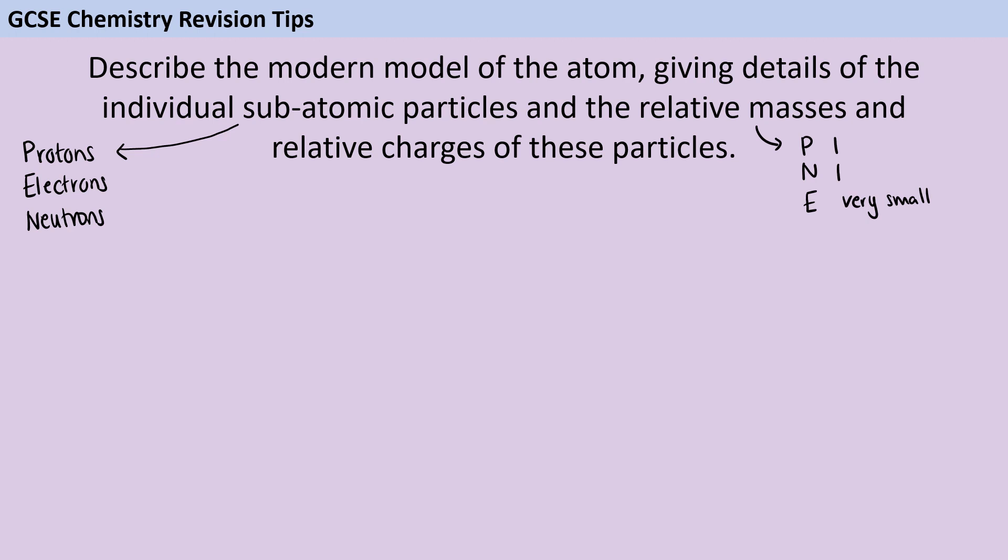Likewise for the relative masses we should have 1 for a proton, 1 for a neutron and very small for an electron. You might have learnt an actual numerical value like 1 over 1840 or 1 over 2000 and if you include that that's absolutely fine, but the specification does say very small, so very small is sufficient.